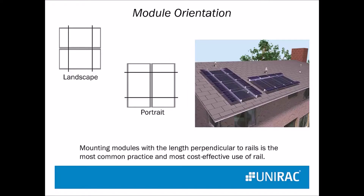Modules may be installed either landscape or portrait, similar to the way the paper comes out of your printer. The most common way is to run them portrait, because that way the rails will be perpendicular to them and they'll be able to catch the rafters, which we are assuming are running north-south up and down the roof.